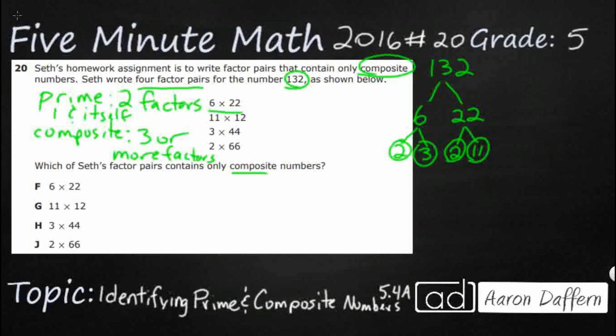So my factors for 132 I would say 2 squared. That means I get 2 twos times 3 times 11. Take a look what I found. I found that that's composite and that's composite. So I'm thinking that might be my answer. Let's check my other numbers.